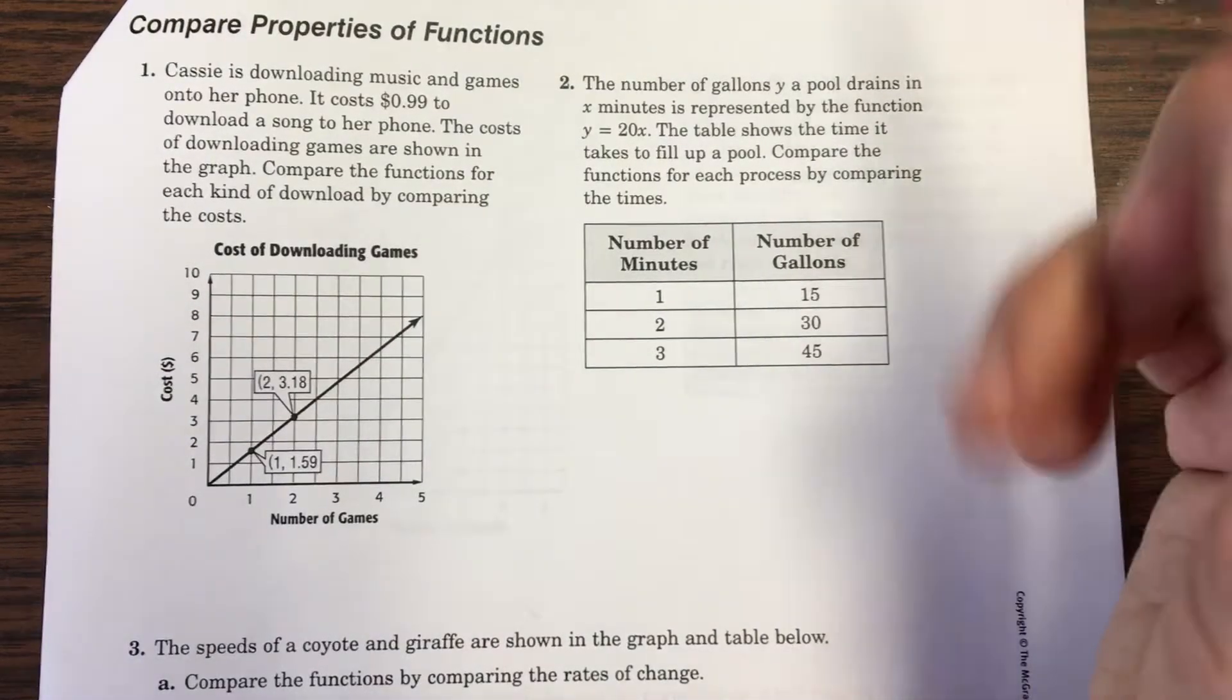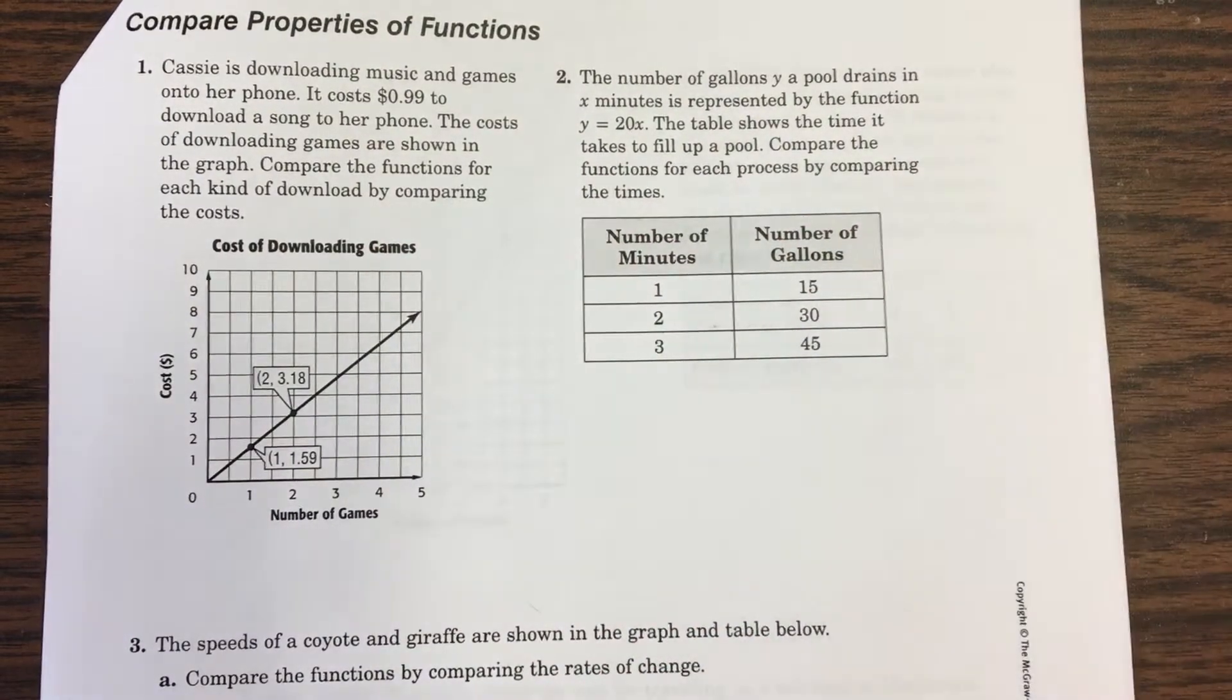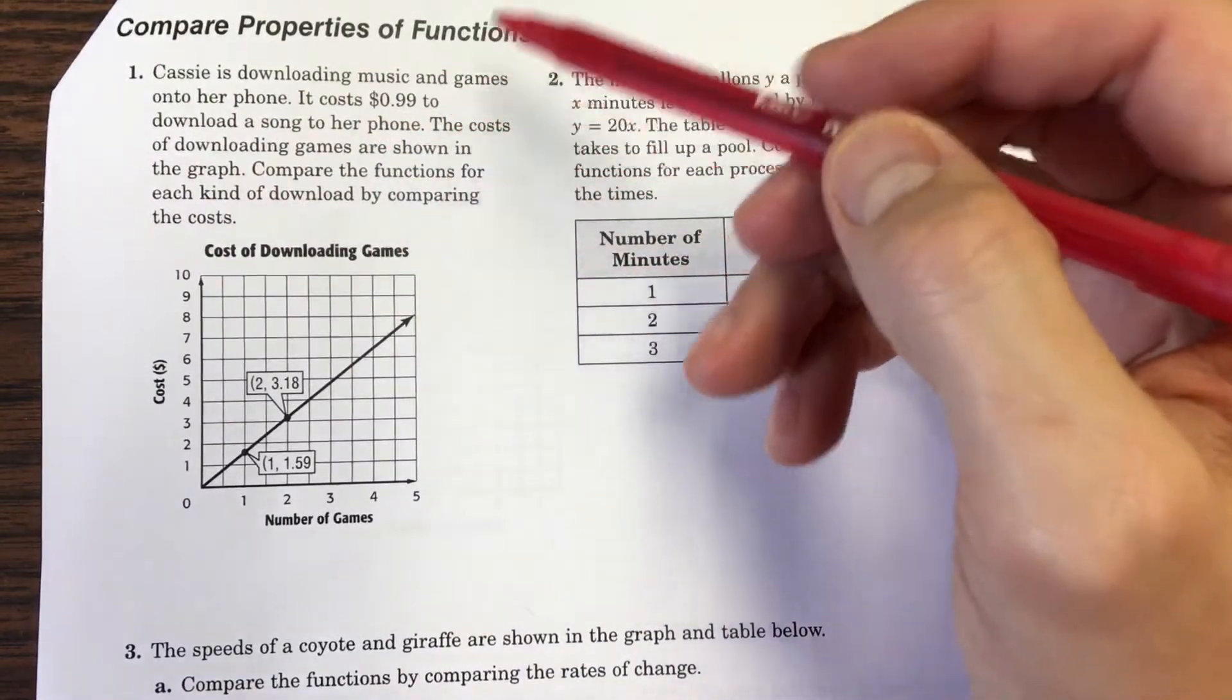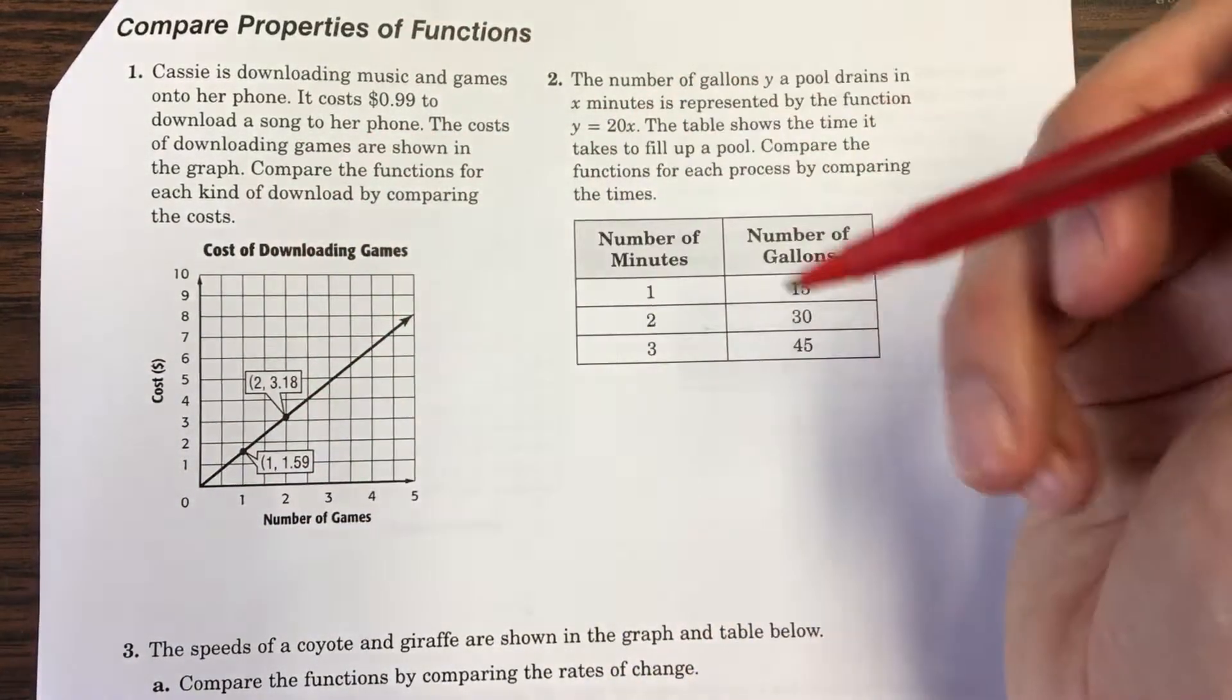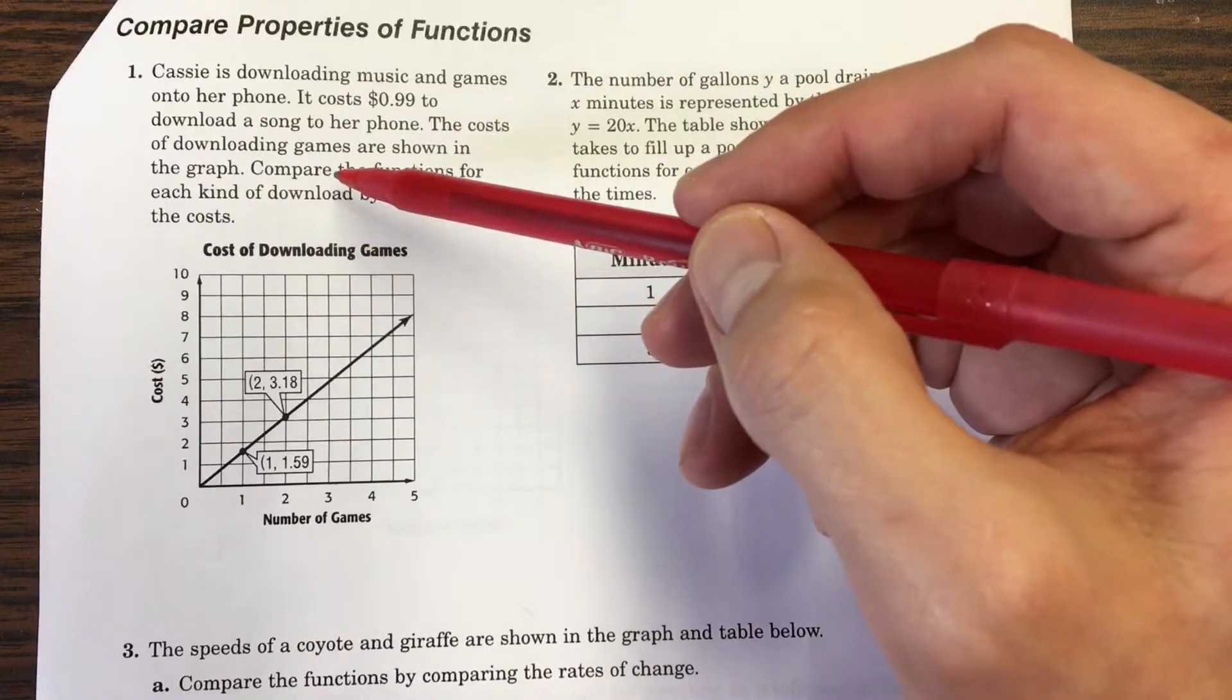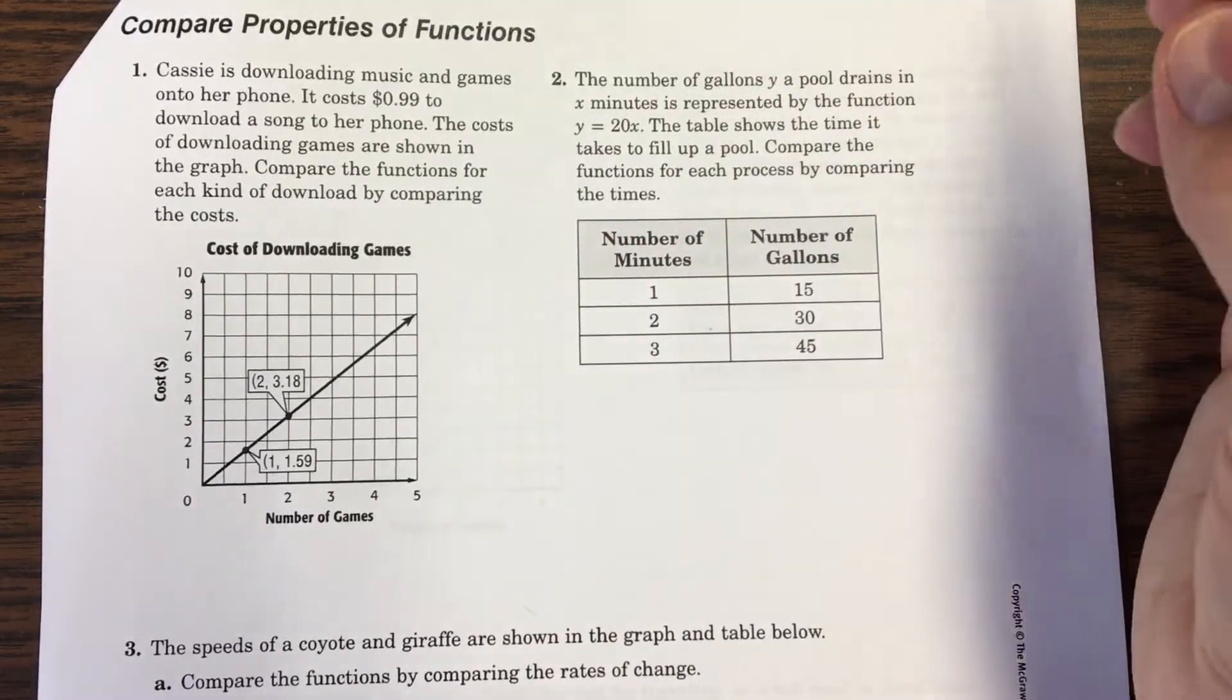What we're going to start to see now is they're going to give you two different scenarios, and they're really just going to try to fool your eyes. Everyone's eyes are going to be drawn to the graphs and the charts, but what you're really going to have to make sure you watch today is there's a second scenario in almost every single one of these questions. A lot of times up here in the paragraph, it gives you information about scenario number one, and then down here, where your eyes are drawn, is situation number two.